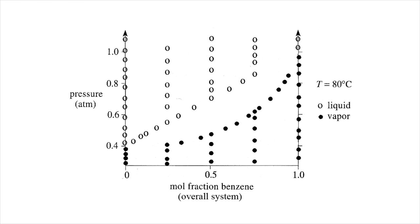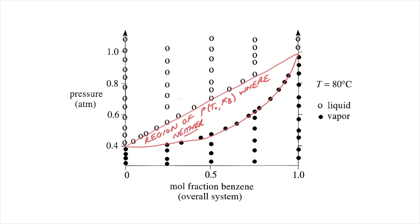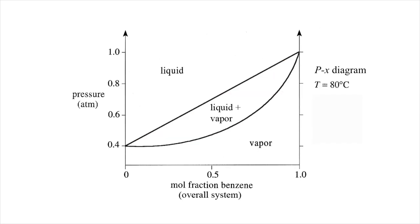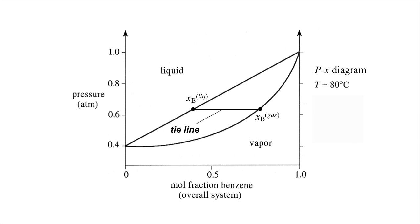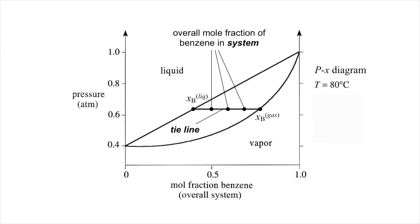Returning to our growing phase diagram, putting this all together, we get a type of phase diagram called a PX diagram, showing regions of pressure and composition where the system is stable as liquid or gas, and a two-phase region where the system will split into a gas with higher benzene concentration and a liquid with lower benzene concentration. At any given pressure, we can draw a tie line, the ends of which correspond to the mole fractions of benzene in the gas and liquid at equilibrium at that pressure and 80 degrees C. Points along this tie line correspond to the overall system-intensive composition of the mixture, depending on the relative amounts of gas and liquid.